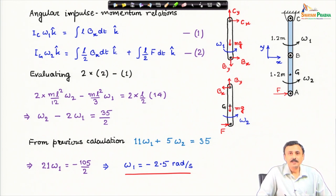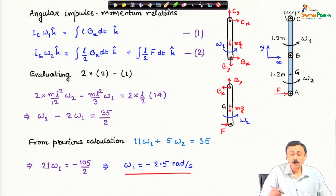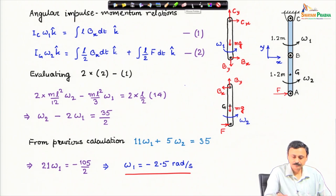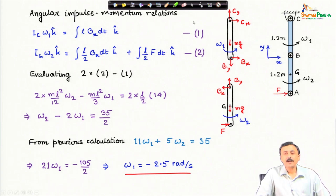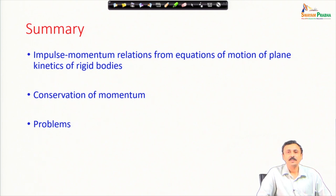The solution has a negative sign with the angular velocity, meaning the direction I had chosen — counter-clockwise — is incorrect; the upper bar actually rotates in the clockwise direction. That completes this problem. To summarize, we have looked at problems involving the angular impulse momentum relation and conservation of angular momentum and linear momentum in these two lectures. With that I will close this lecture.